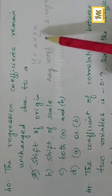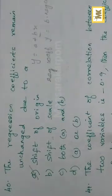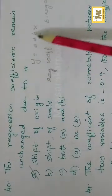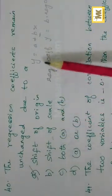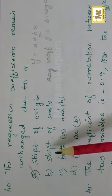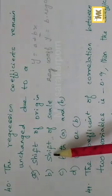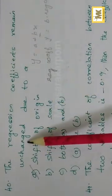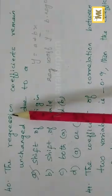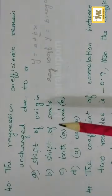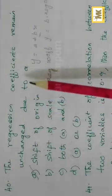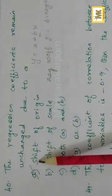Shift of scale — when the scale changes, the regression coefficient definitely changes. For example, Y equals 2 plus 5X versus Y equals 1 plus 2X — the B values are different. So shift of scale changes the regression coefficient. But shift of origin leaves it unchanged. So the right option is: regression coefficient remains unchanged for shift of origin.